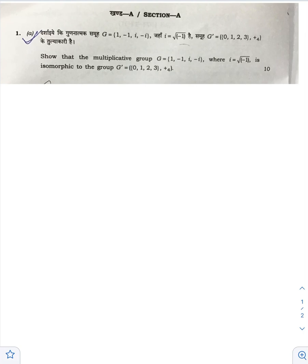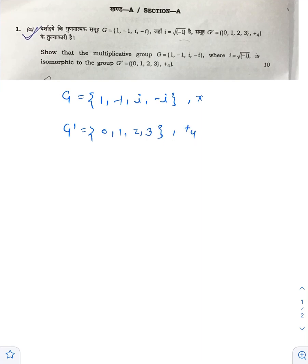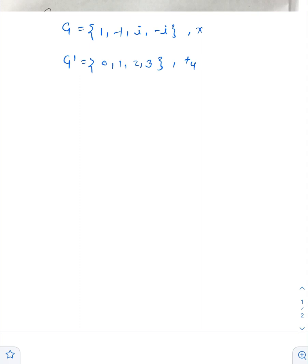Show that the multiplicative group G equals {1, -1, i, -i} is isomorphic to the group G' equals {0, 1, 2, 3} with respect to addition modulo 4. We need to show that these two groups are isomorphic.